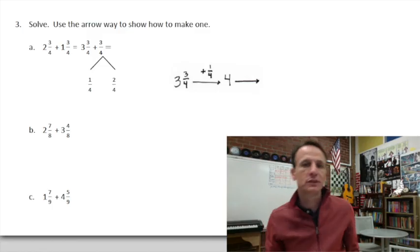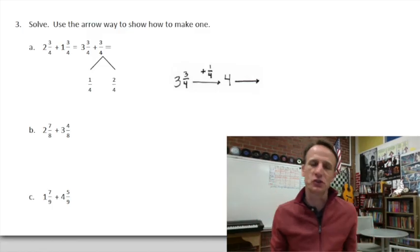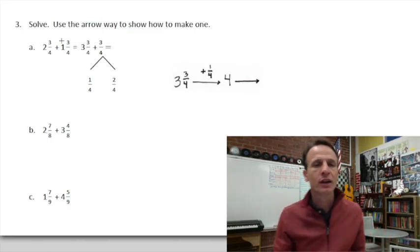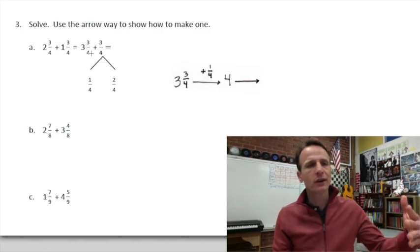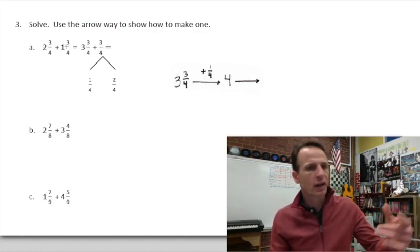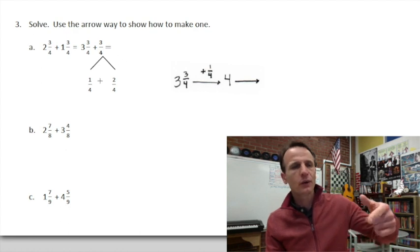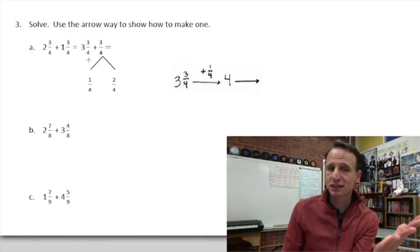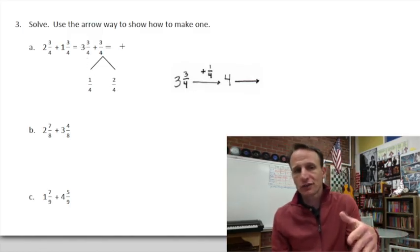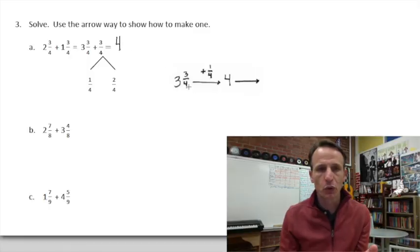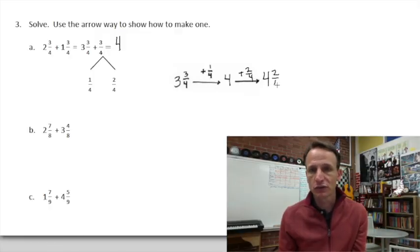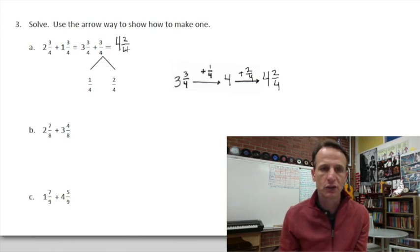Number three: solve using the arrow way to show how to make one. I actually like the arrow way — this is how I think. So if we're adding two and three-fourths plus one and three-fourths, two and one are three, and we have those three-fourths. If I borrow one-fourth off the other three-fourths, that gets me to a clean four, and then there's another two-fourths. So our sum total is four and two-fourths.